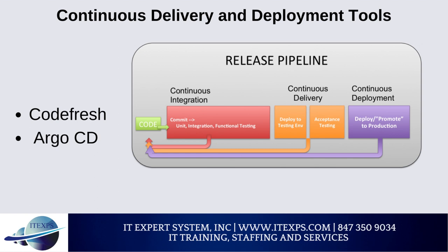Argo CD is a Kubernetes-native CD tool optimized for GitOps. It stores configuration in a Git repository and automatically applies it to Kubernetes clusters, making it easy to integrate with existing workflows. Argo CD can detect configuration drift, monitor application health, and rollback unwanted configuration changes. It also supports progressive delivery strategies like Blue/Green and Canary deployment.